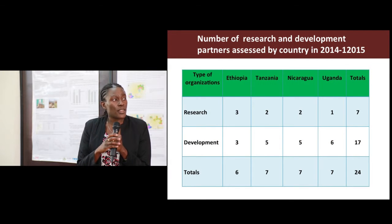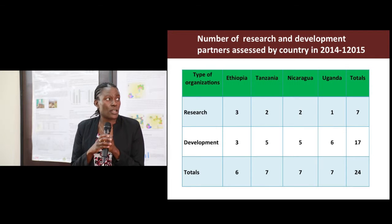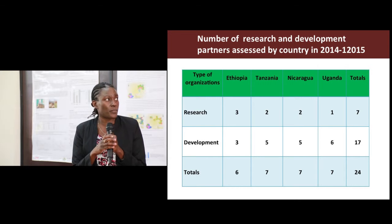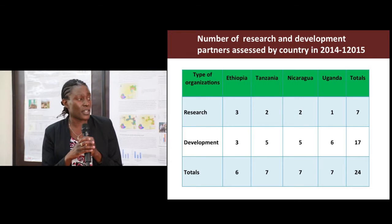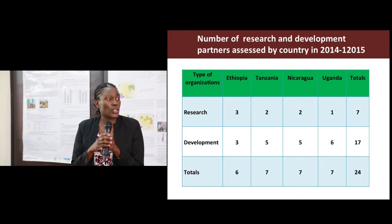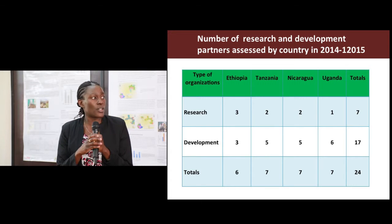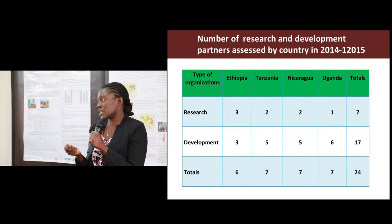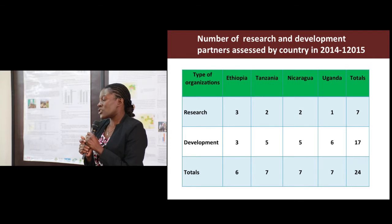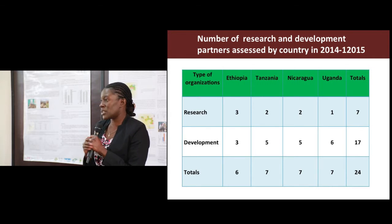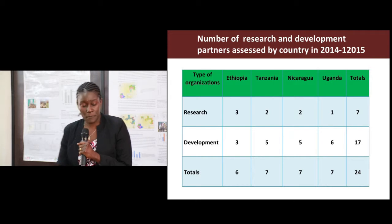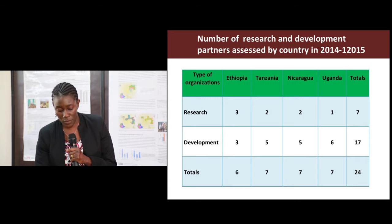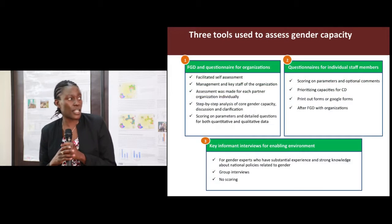Using the methodology that we developed together with Transition International, we were able to carry out assessments in four value chain countries — Ethiopia, Tanzania, Nicaragua, and Uganda. In total, we assessed 24 development partners and research partners. These are partners that were strategically selected based on their commitment to gender within the value chain, but also their active involvement in the value chain.